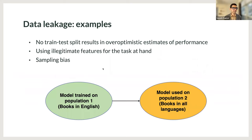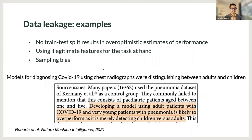The third example of leakage is when a model trained on one population is used to make inferences about another. For instance, if you train a model on books written in English and then use it to make inferences about books written in all languages — that's sampling bias. One of my favorite examples is when models used for diagnosing COVID-19 were actually diagnosing whether someone is a child or an adult, because all chest x-rays of people with COVID came from adults and all x-rays of people without COVID came from children.